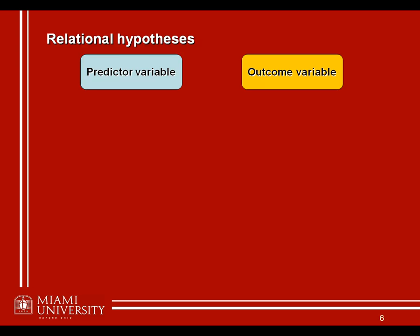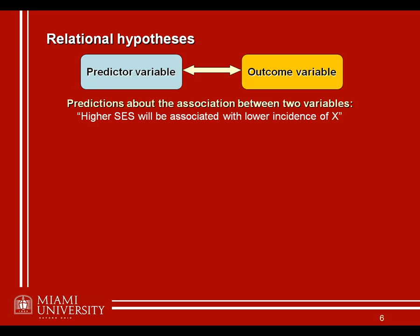We can also talk about different types of hypotheses, and again this specifically came up in chapter one, so I'm just going to quickly review it again here. First, we talked about relational research and relational hypotheses. Here you would have two variables — a predictor and an outcome variable — and what we're interested in is just the relationship between the two. We might say something like higher socioeconomic status will be associated with lower incidence of some mental illness or some behavior X. So here all we're looking at is the relationship between the two — as one goes up, the other might go down — without being able to say anything about cause and effect.